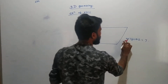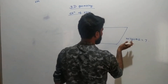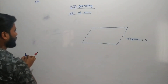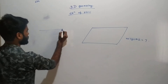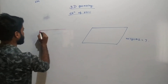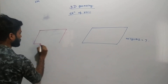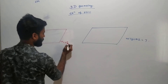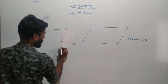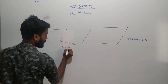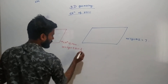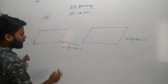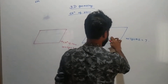The question asks us to find the direction cosines of this plane. In the last video we learned that in Cartesian form, the equation of the plane is lx + my + nz = d, where d is the perpendicular distance from the origin.